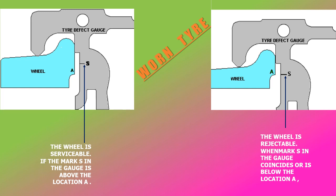Worn tire or tread: in service the wheel is liable to wear and tear and the tire thickness gets reduced. We measure it by placing the gauge in this fashion, touching this surface. If the mark on the gauge goes above point A, then the wheel is serviceable. But if the mark S goes down below point A, then the tread is worn out and it is a rejectable limit.